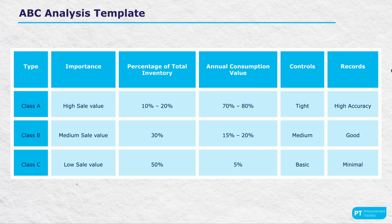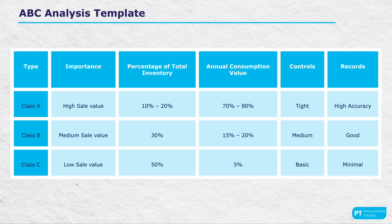The ABC analysis categorizes inventory items into three classes — A, B, and C — based on factors such as sales value, percentage of total inventory, annual consumption rate, required controls, and record keeping. Let's break down the columns. Type: we categorize inventory into class A, class B, and class C based on their importance and contribution to sales. Importance: class A items are high-priority, the major profit drivers; class B items are of medium importance; and class C items, while less critical, are still essential. Percentage of total inventory shows the proportion of total stock each class represents, helping you see which items dominate in your inventory.